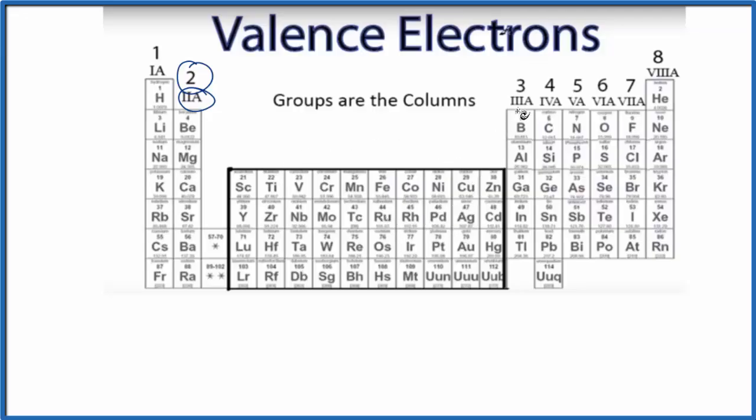We'll go to group three. Now, this is sometimes called 13, here it's written 3A. Three valence electrons. So if we have boron, one, two, three. And again, it may be written differently. Some people do spread them out.